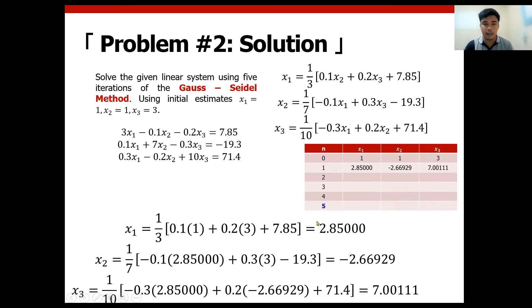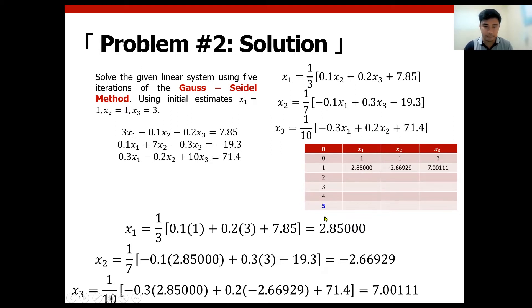After finding the reduced form, here we have the solution process. We use the current estimates. Solving for x1 here, we substitute the initial estimates: x1 = 1, x2 = 1, and x3 = 3. So in our reduced form, we substitute x2 as 1 and x3 as 3. We get 2.85 — write that down here on your table.